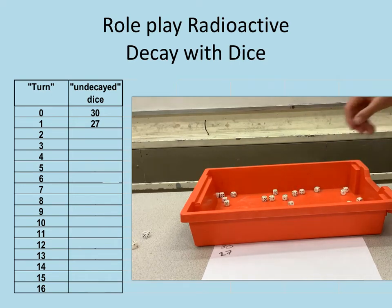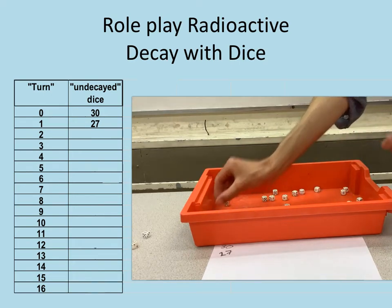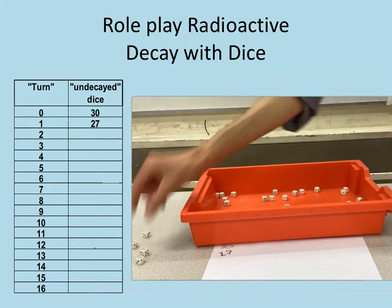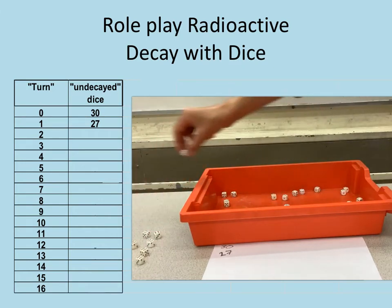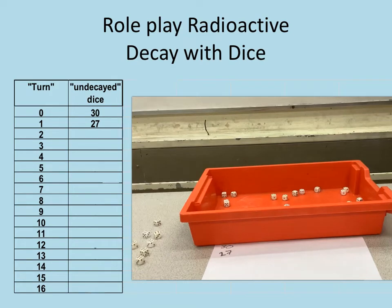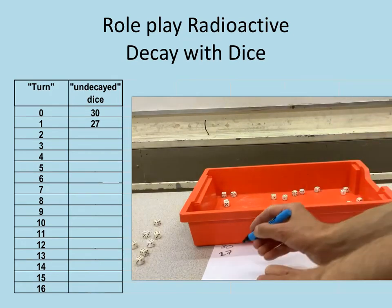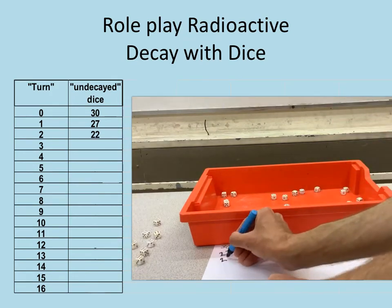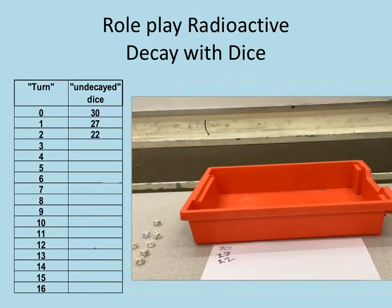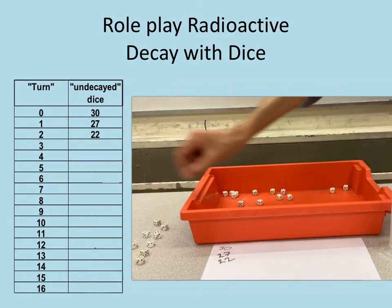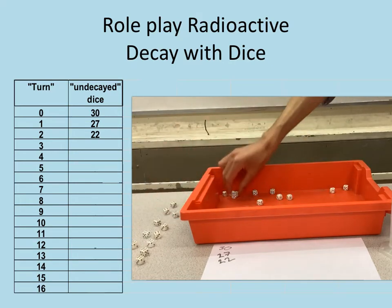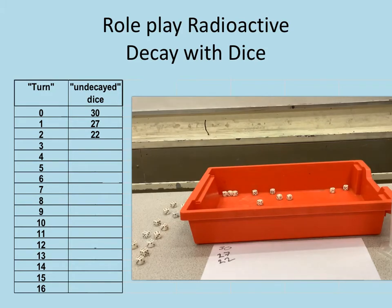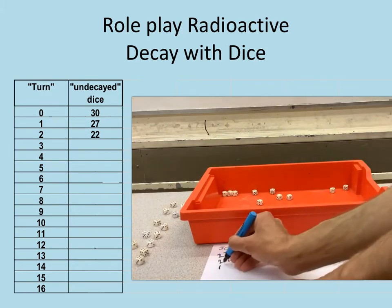This time one, two, three, four, five more have decayed, which would take me down to 22 dice left. And this time one, two, three, four, five have decayed, which will leave me with 17 remaining.